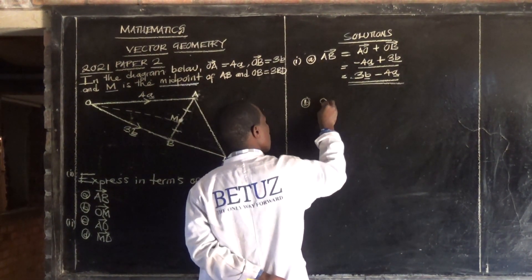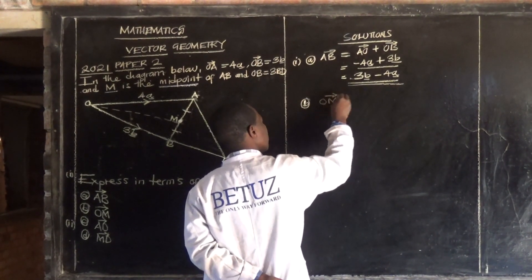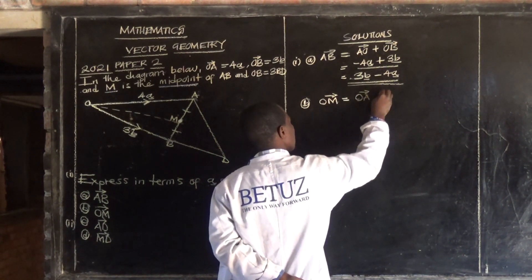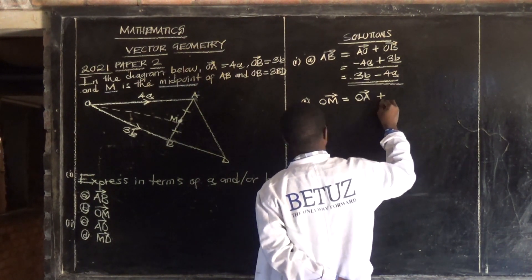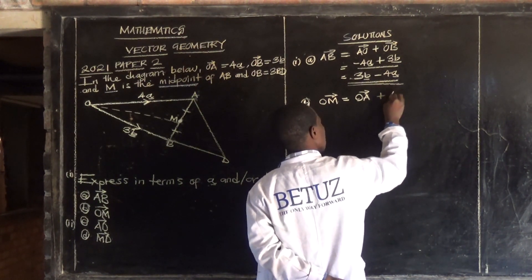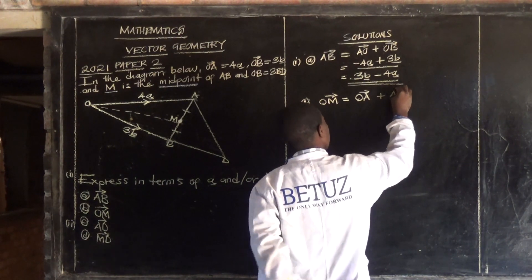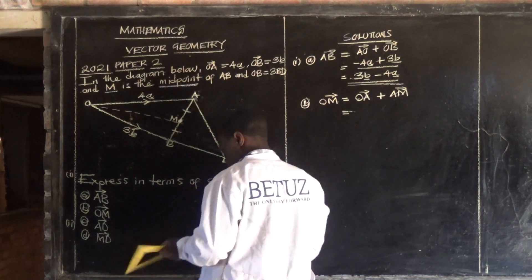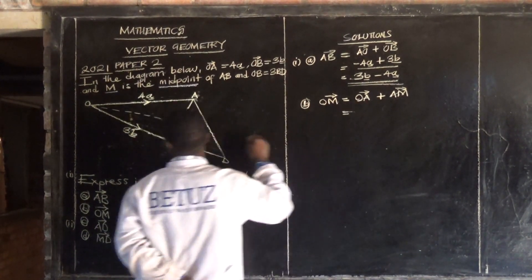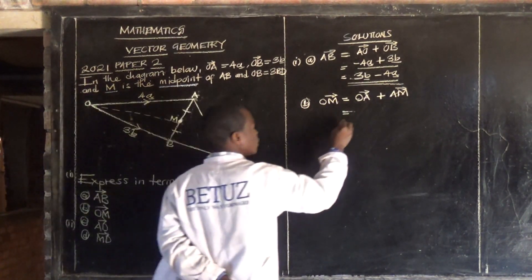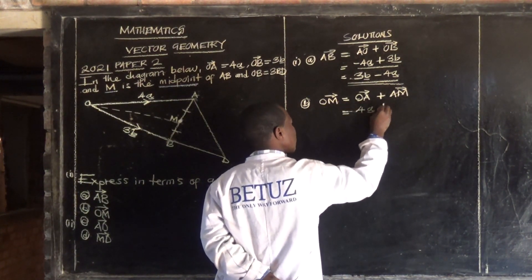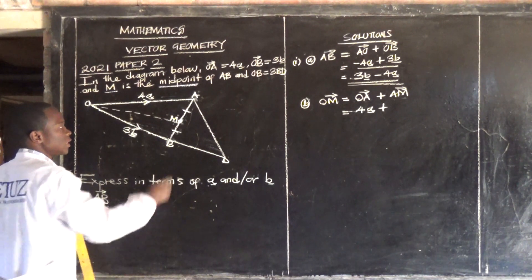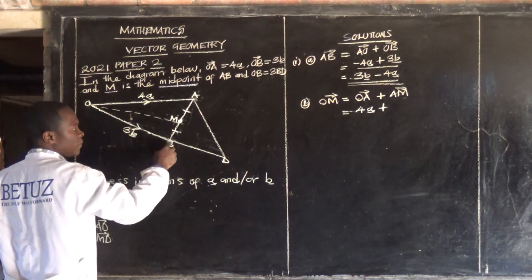OM equals OA plus AM. What is our OA? That is 4 vector a. Plus AM — remember, AM is half of AB because M is the midpoint of AB. So AM is one over two of vector AB.